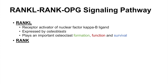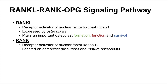RANK stands for Receptor Activator of Nuclear Factor Kappa B, and as its name suggests, RANK is a receptor located on osteoclast precursors and mature osteoclasts. RANK is the receptor for RANKL, or alternatively, RANKL is the ligand for the RANK receptor.